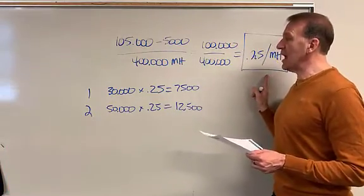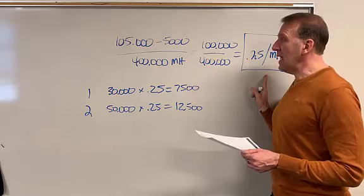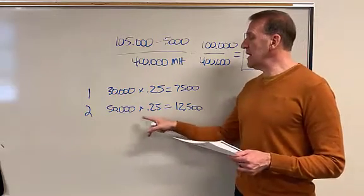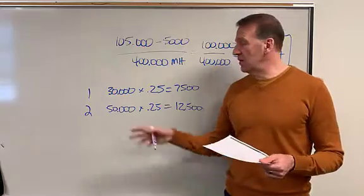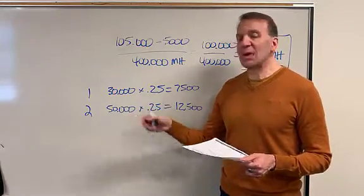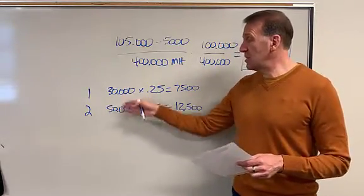So it's that simple. You just have to get your rate, 25 cents per hour in our example, and then you use that rate times the number of machine hours we had in each year.